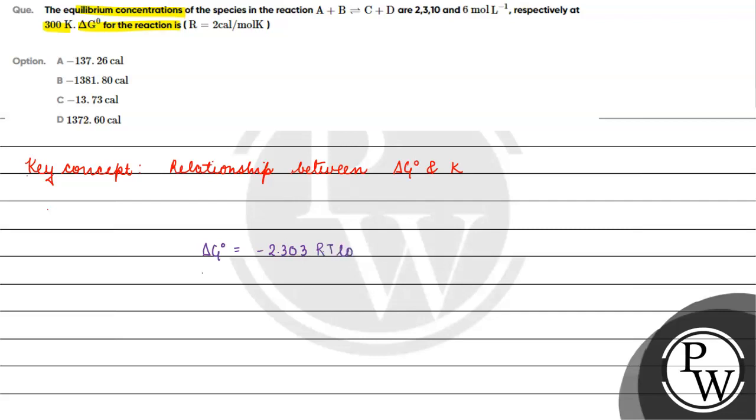This is 2.303 times R, which is 2 calories per kelvin per mole, times T, times log base 10 of the equilibrium constant K.